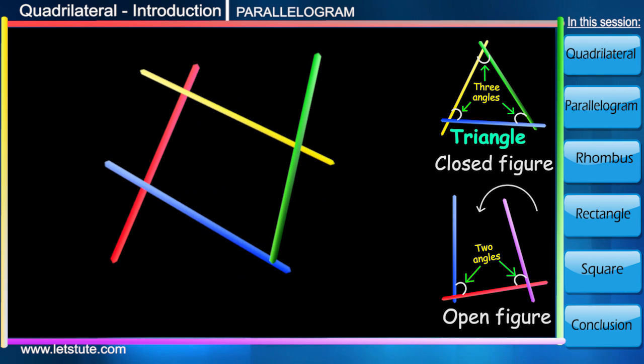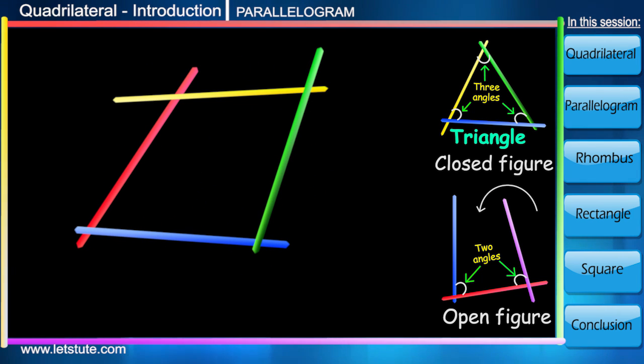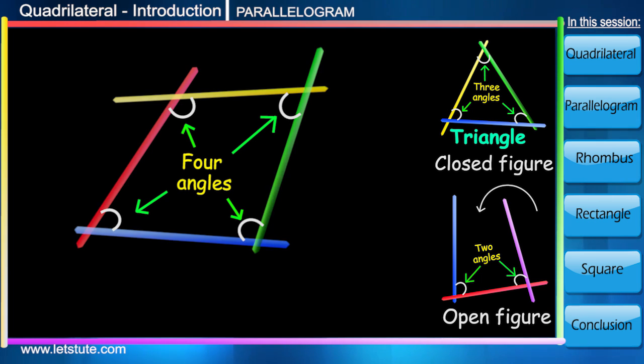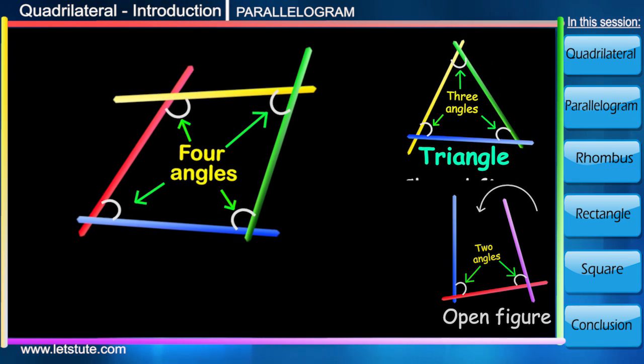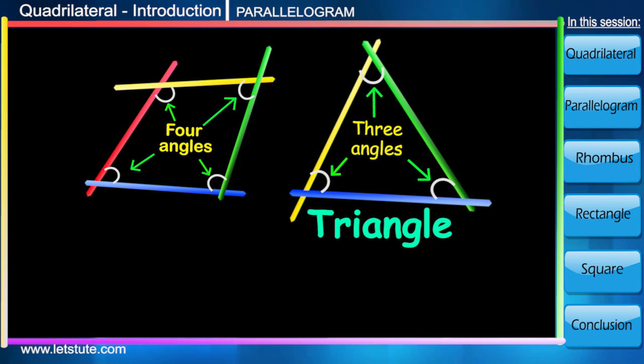Now let's take four sticks and try to form a closed figure. How many angles will it make? It will definitely make four angles. As soon as the number of sides increase, the number of angles also increase.